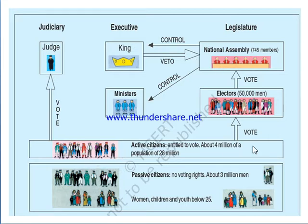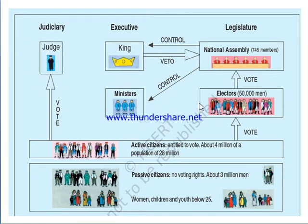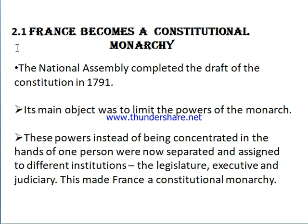Active citizens elect electors, electors elect the National Assembly, and the National Assembly members finally become ministers and rule the country. The same active citizens also vote for judges, making the judiciary independent with no link to the other organs. This was the political system of France at that time — that's why France became a constitutional monarchy.